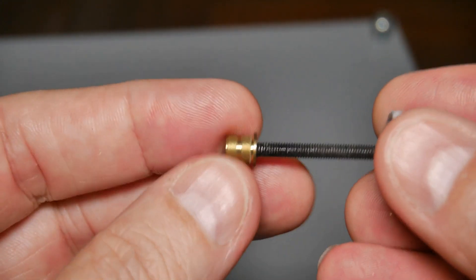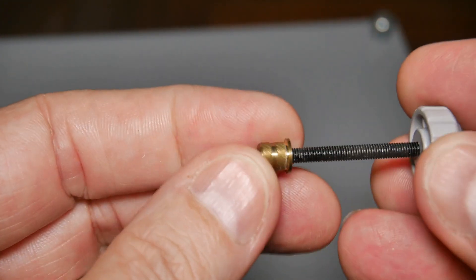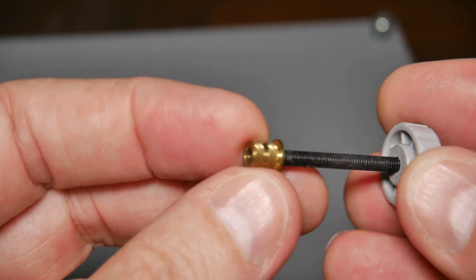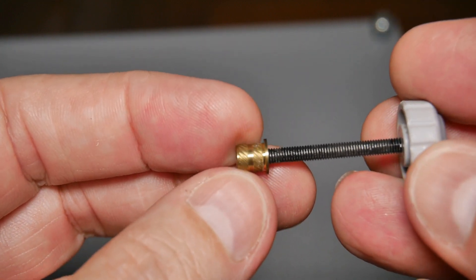You may have seen a threaded insert like this one. This is brass and it is made to heat press into a hole that's been drilled in plastic.